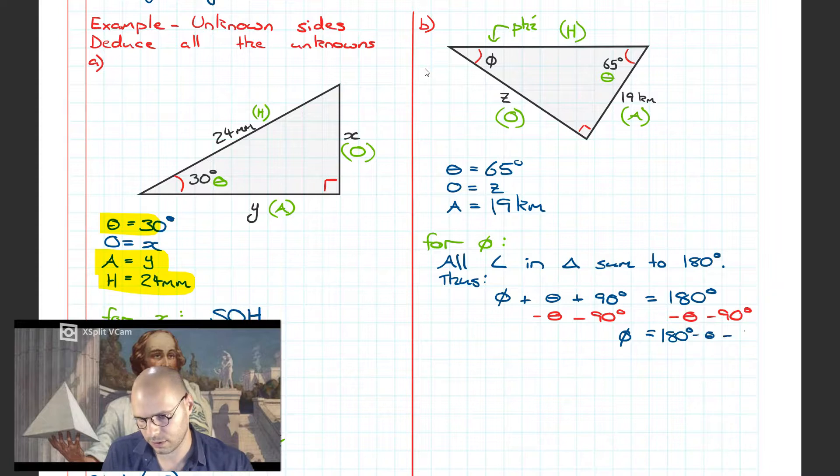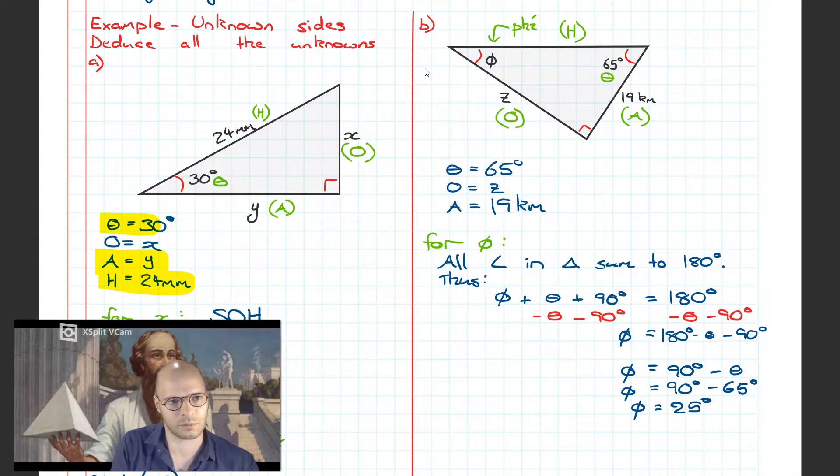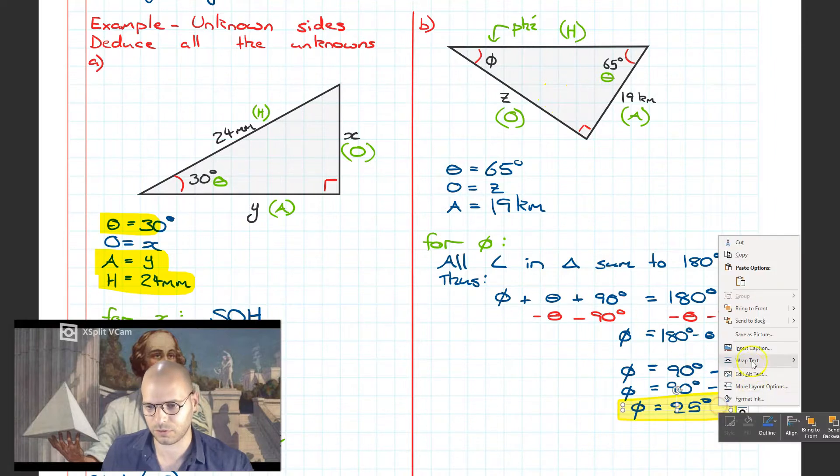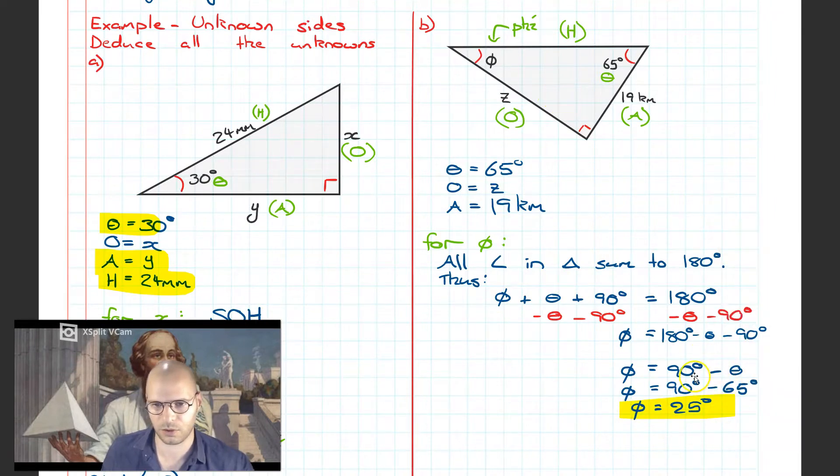Rearranging to solve for phi, we simply take theta and 90 from both sides, which is going to leave us with an equation that says phi is equal to 180 take theta take 90. Doing some of this in my head, 180 take 90 is simply just 90 degrees. Take theta, we know theta to be a value of 65 degrees. Therefore, the value of phi is going to be 25 degrees. Simple as that. Not really a trig problem because we don't use the ratios, but we can use this sort of deductive reasoning for problems coming up in the future.